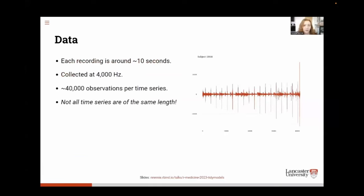So in terms of what each recording actually looks like, each one is around about 10 seconds long. And that data is recorded at 4000 hertz. So for each time series, we have around about 40,000 observations, which is quite a lot. And one of the key things here is that partly because of this very fine resolution of the data is that not all time series are of exactly the same length.